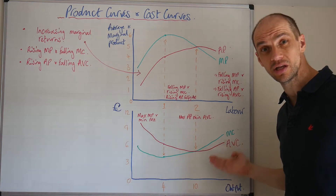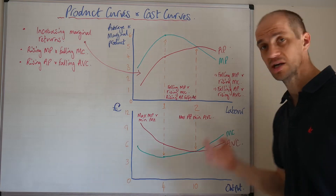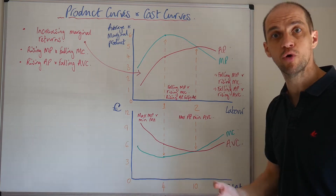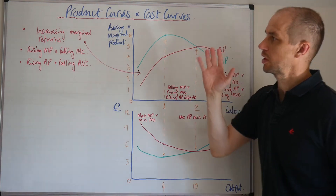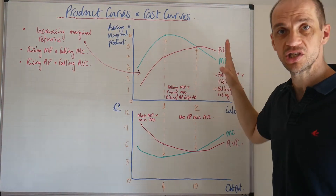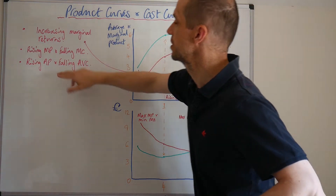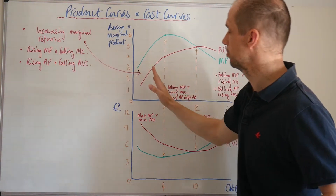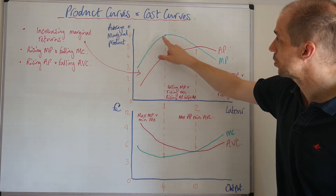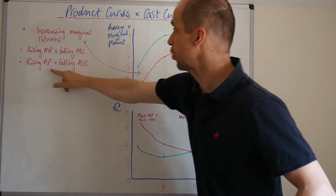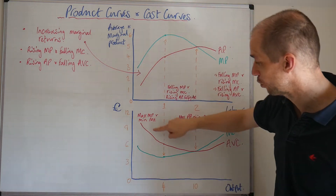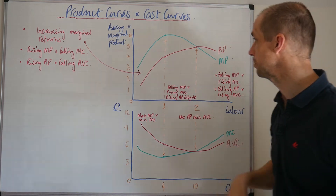The cost of producing that extra unit of output is rising, so that pulls up the average variable cost as the average product falls. So to run through the key points: we see increasing and then diminishing marginal returns. Rising marginal product means falling marginal cost; rising average product means falling average variable costs.